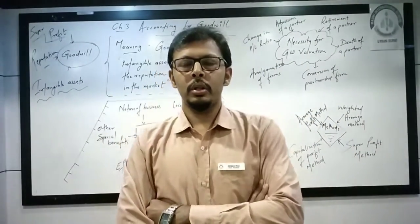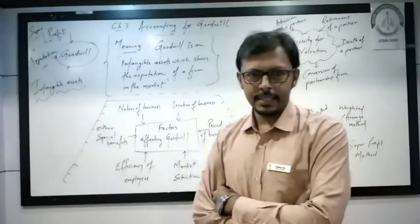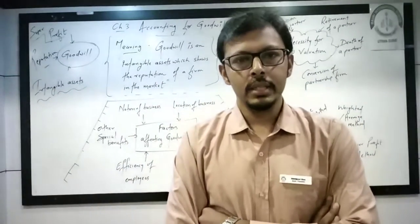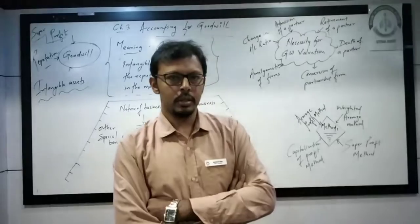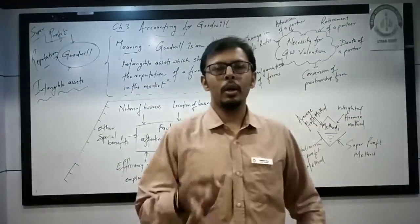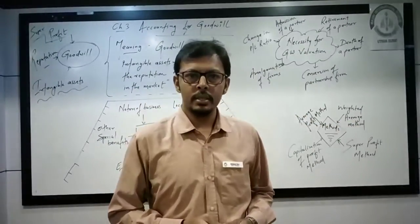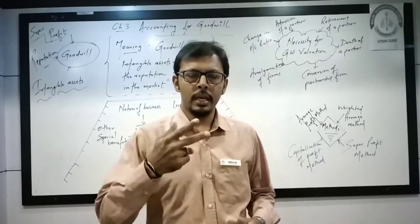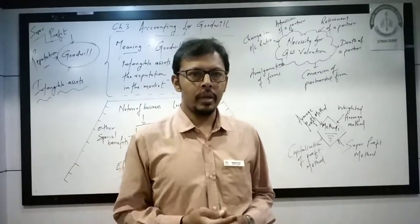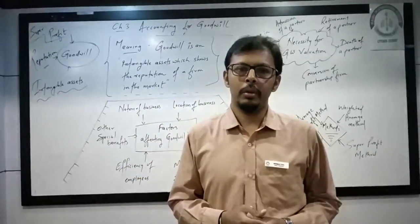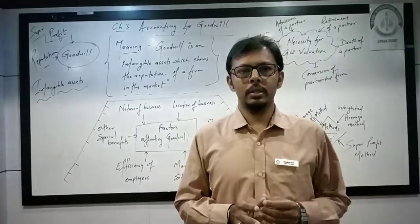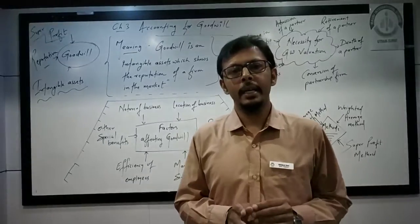There are basically two types of assets: one is non-current assets and the other is current assets. In non-current assets there are four more classifications. Under fixed assets, there are two more classifications: one is tangible and one is intangible assets. Goodwill is an intangible asset.